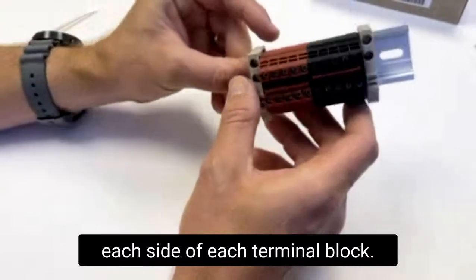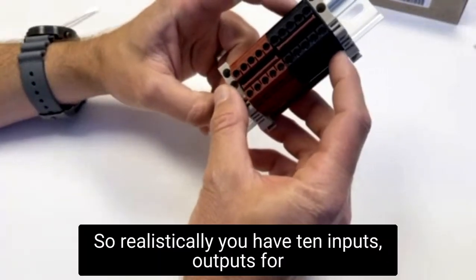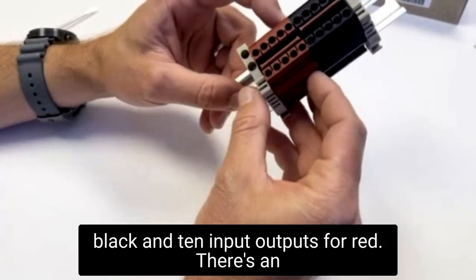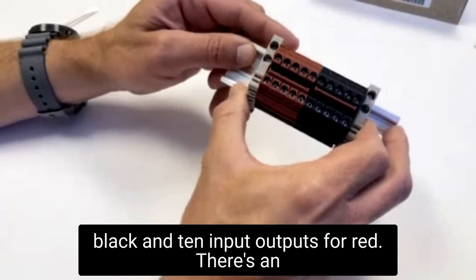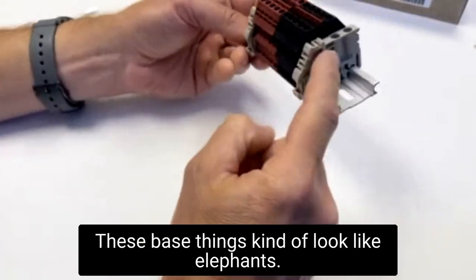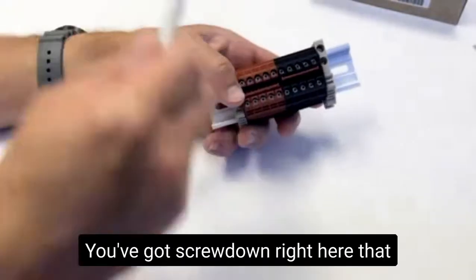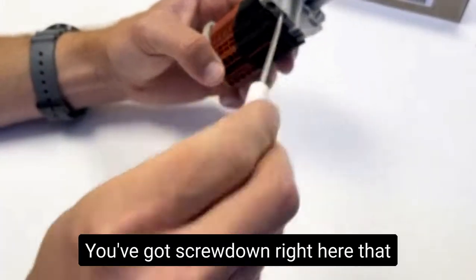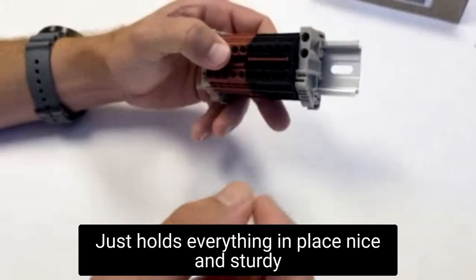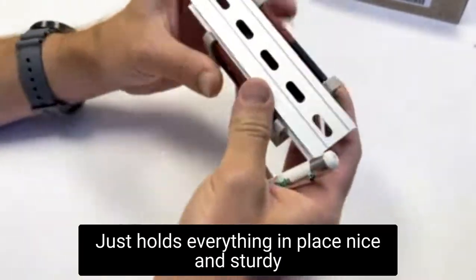on each side of each terminal block, so realistically you have 10 inputs/outputs for black and 10 inputs/outputs for red. There's an SS2 end bracket. These base things kind of look like elephants, they pinch down. You've got a screw down right here that pinches down. The back foot just holds everything in place nice and sturdy on a